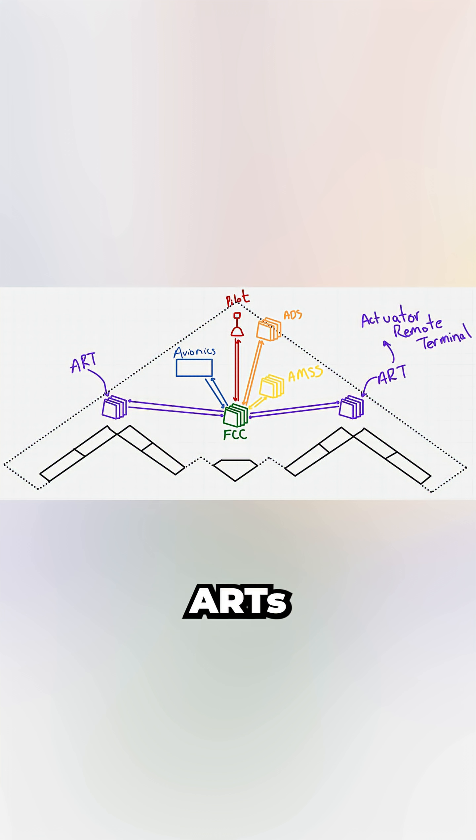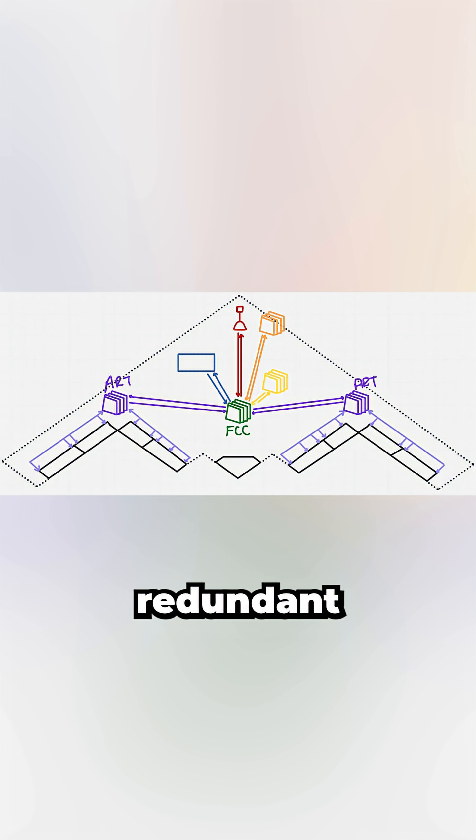It sends these commands to the ARTs, actuator remote terminals positioned near the edges of the aircraft. Each ART controls redundant actuator loops that physically move the control surfaces.